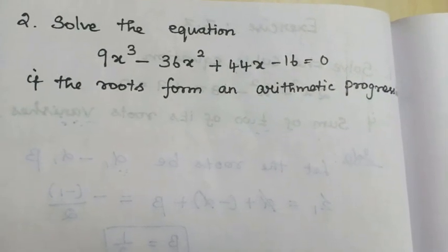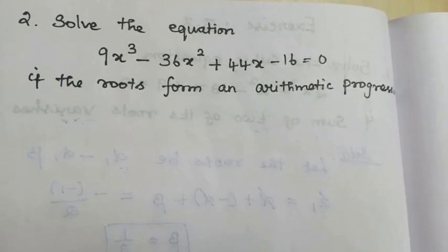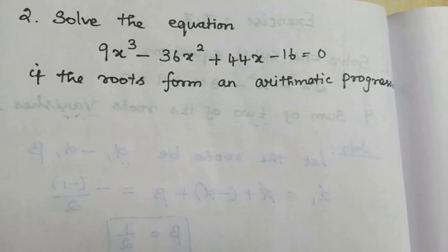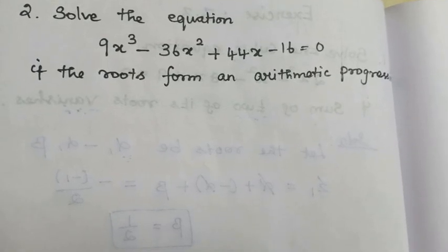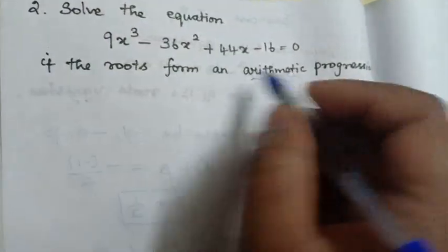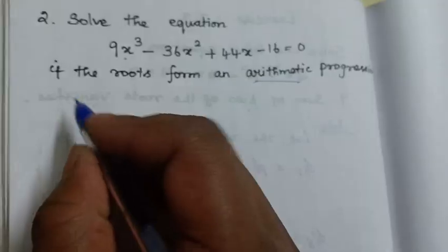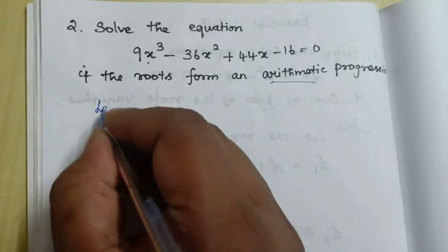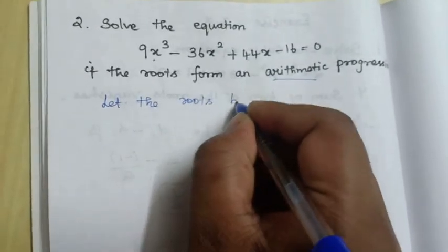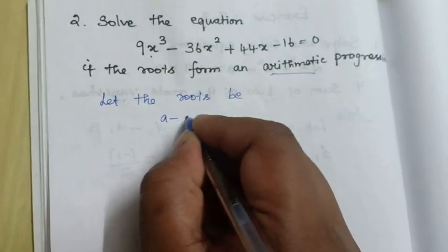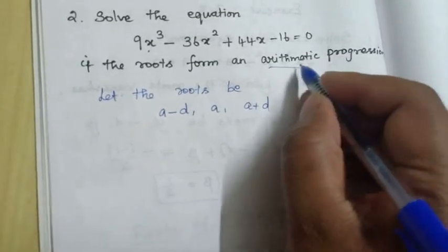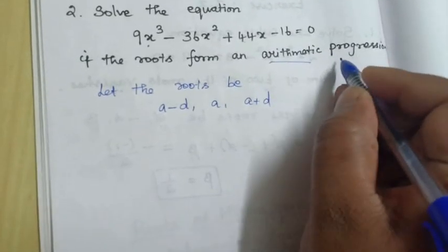Solve the equation 9x cubed minus 36x squared plus 44x minus 16 is equal to 0, if the roots form an arithmetic progression. Since it is a cubic equation with roots in AP, we let the roots be a minus d, a, and a plus d.